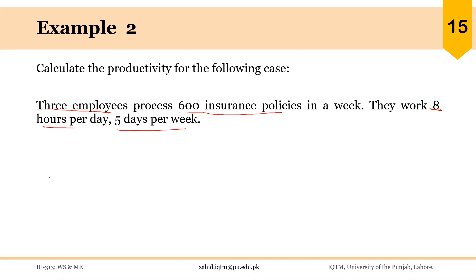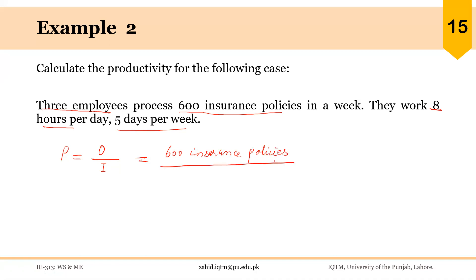So here we are talking about a service operation. The productivity will be output over input, and here the output is 600 insurance policies, or simply 600 policies. The input here is time, as was in the previous examples.